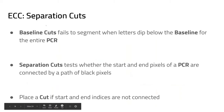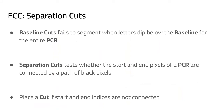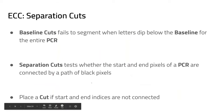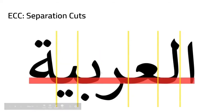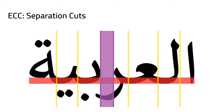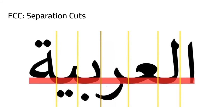This is where the second algorithm, separation cuts, comes in. Since baseline cuts fails when pixels exist below the baseline, separation cuts tests whether the start and end pixels of the PCR are connected. It finds the start pixel and end pixel at the PCR's intersection with the LMT, and since there is no connected path of black pixels between them, it places a cut within the PCR.